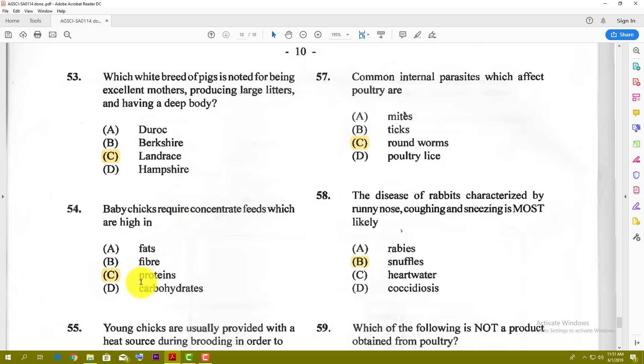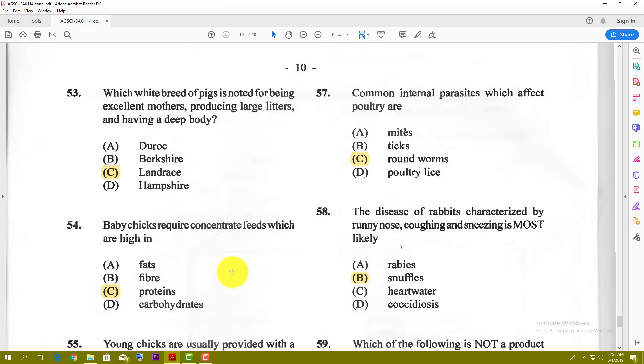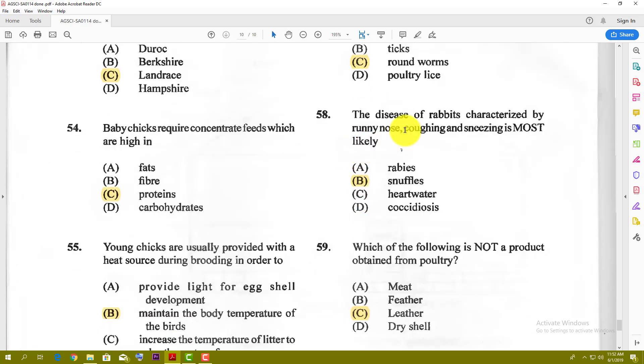Number 54: Baby chicks require concentrate feed which are high in protein to develop their tissues and organs. Number 55: Young chicks are usually provided with a heat source during brooding in order to maintain the body temperature of the birds. Number 56 and 57: Common internal parasites which affect poultry are roundworms. Most of these are not internal parasites, so roundworm is one of the only ones by deduction. Number 58: The disease of rabbit characterized by runny nose, coughing and sneezing is most likely snuffles.